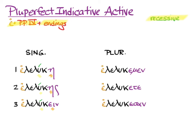In the plural, we have a short last syllable, so we count one, two, three to go back as far as an acute can go. Then again, short — one, two, three — and acute. Short, one, two, three, and acute. And that's the whole conjugation.